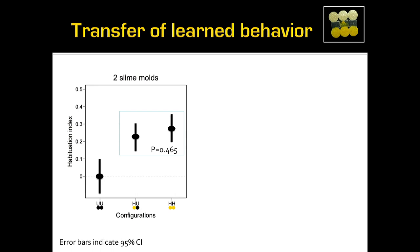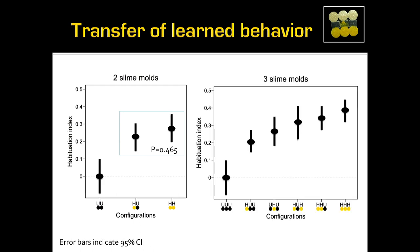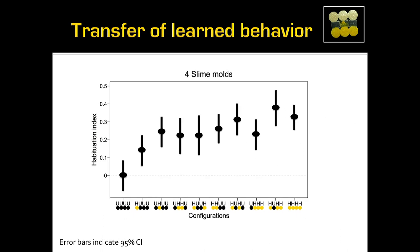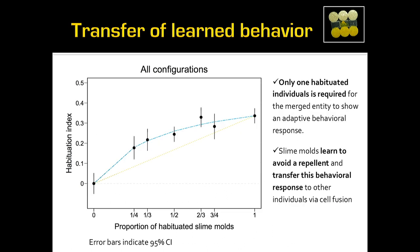With three slime molds, all group combinations showed a habituation index far above zero — even when only one habituated individual was included. With four slime molds, the same pattern held: all entities were habituated to salt even if just one habituated slime mold was in the merged entity. When plotting the proportion of habituated slime molds against the habituation index, the data didn't follow a simple dilution line — something active is happening when information is transferred from one slime mold to another.